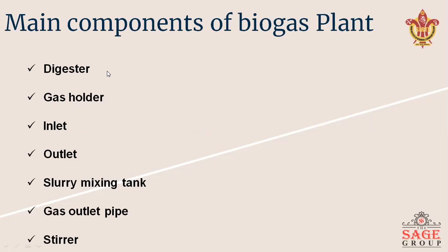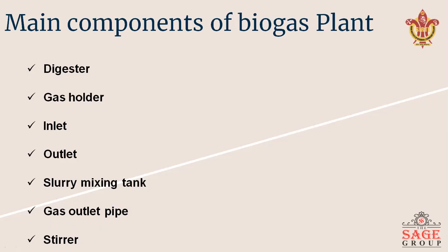The digester is the container where digestion takes place. The gas holder's main function is to hold the gas and send it to other places where it is used. The inlet is used for feeding slurry from the mixing tank. The outlet is used to discharge sludge from the biogas plant. The slurry mixing tank is used for mixing or preparing the slurry. The gas outlet pipe is connected to the gas holder. The stirrer, if required, is used for proper mixing of the slurry.